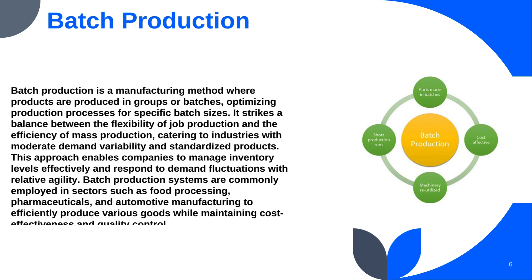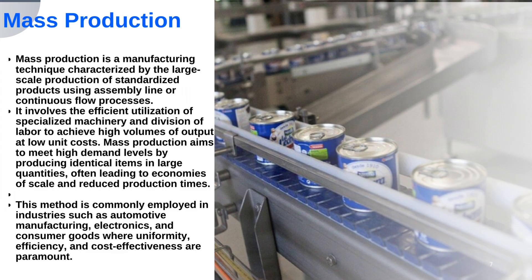Batch production is a widely utilized method in industrial management, characterized by the manufacture of goods in distinct groups or batches. Unlike mass production, batch production involves producing a limited quantity of items, often with similar characteristics or specifications, before switching to a different product or configuration. This approach allows manufacturers to capitalize on economies of scale with each batch while retaining flexibility to accommodate variations in demand and product specifications. Batch production is commonly found in industries such as pharmaceuticals, food processing, and textiles. By organizing production into manageable batches, companies can optimize resources, manage setup times, and maintain quality control standards across production runs.